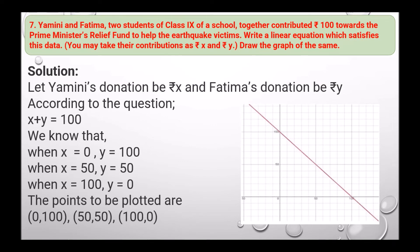Next question: Yamini and Fatima, two students of Class 9, together contributed rupees 100 towards the Prime Minister's Relief Fund. Write a linear equation for this data, taking Yamini's contribution as rupees x and Fatima's contribution as rupees y. According to the question, x plus y equals 100. When x equals 0, y equals 100; when x equals 50, y equals 50; when x equals 100, y equals 0. The points to be plotted are (0, 100), (50, 50), and (100, 0), and this is the graph.